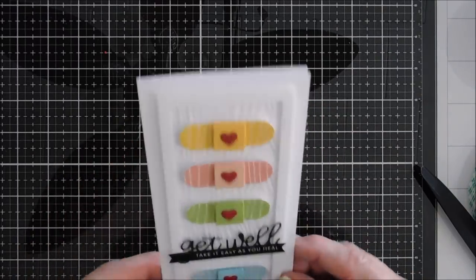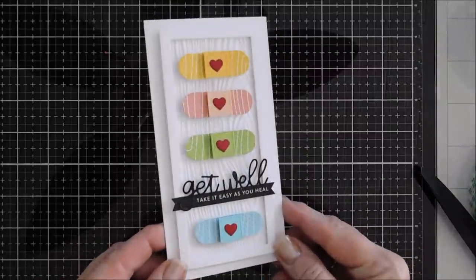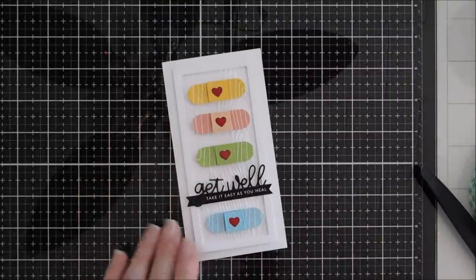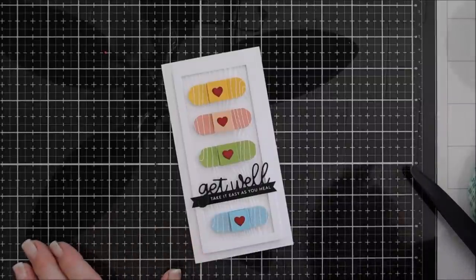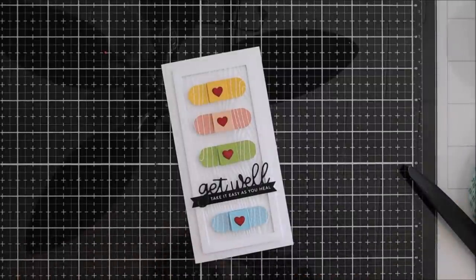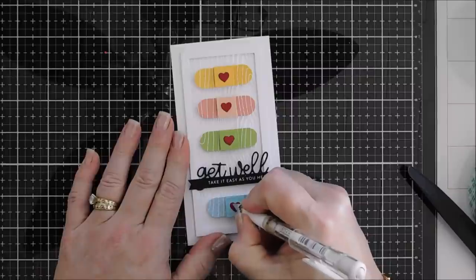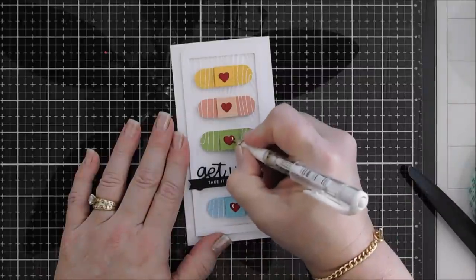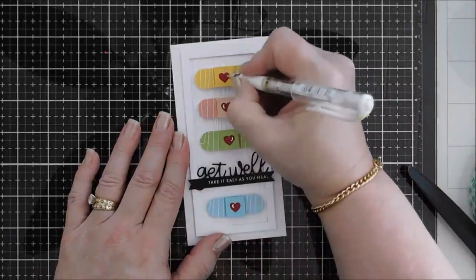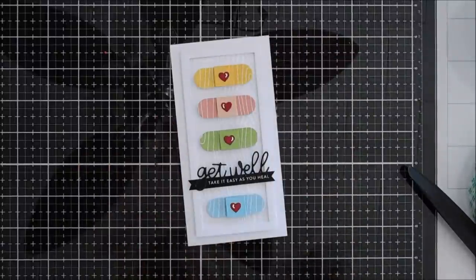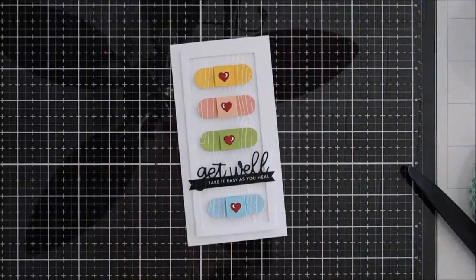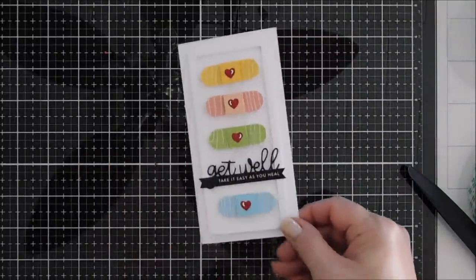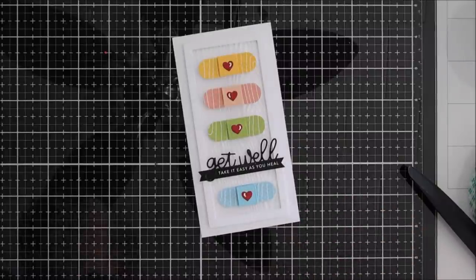Okay I went ahead and added my band-aids evenly spacing them, added my sentiment skipping one and then we need some bells and whistles. I'm going to take my white gel pen and since we have a lot of white area in our background I like to highlight something bringing in some white to the colors. So I basically added some little dash marks to the center of the heart or the sides of the hearts there.